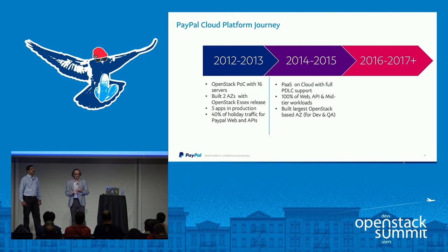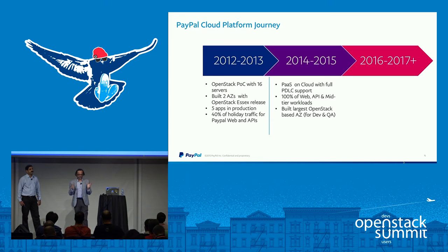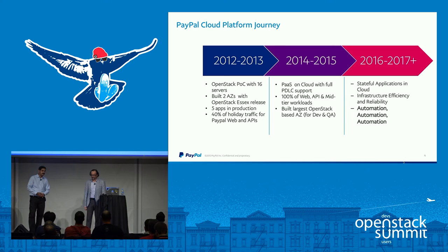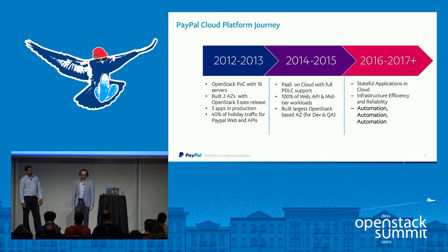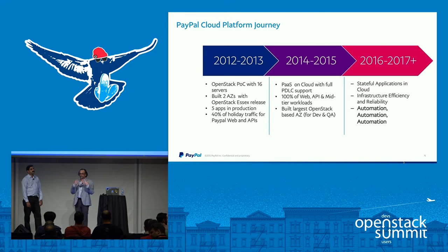All of our web API and mid-tier is now running on OpenStack. When we split away from eBay and moved all the PayPal workloads from eBay data centers into PayPal data centers, we built the world's largest availability zone running OpenStack: 2,000-plus servers, three Nova cells, each with about 800 or 900 hypervisors — so 2,000-plus hypervisors running in a single availability zone. In 2016 and 2017 we are moving stateful applications into our cloud, focusing a lot on efficiency and reliability. Automation becomes key, with as little manual intervention and deployment remediation as possible. That's what this talk is about — orchestrating into the cloud in a more automated and scalable way.